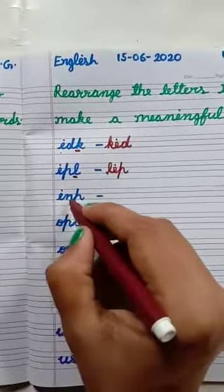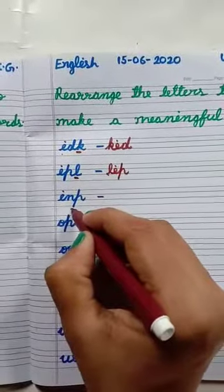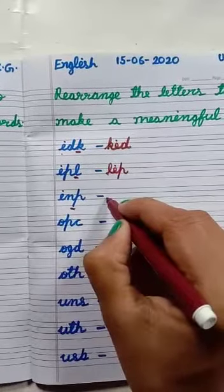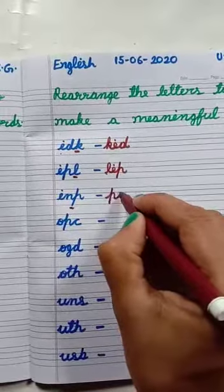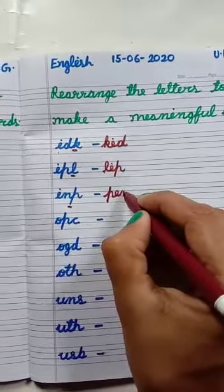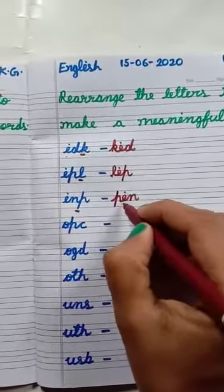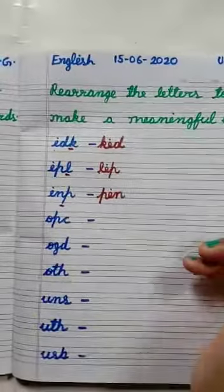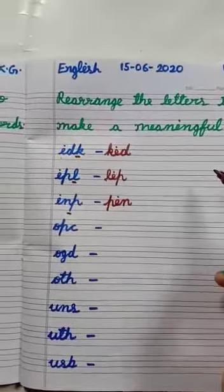The letters are I, N, P. First, I have written P, then I, then N. P, I, N — Pin. Pin is a meaningful word.